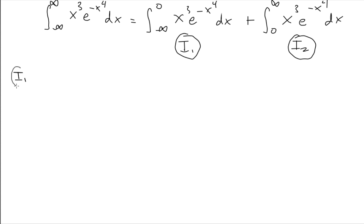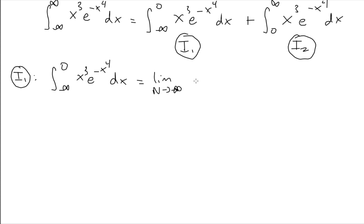Let's take a look at I1. I1 is the improper integral from negative infinity to zero of x cubed e to the negative x to the power of 4 dx. Of course, that means it is the limit as n goes to negative infinity of the integral from n to zero of x cubed e to the negative x to the power of 4 dx. This is what it means to have an infinity in the bottom — we replace it by some number n and at the end let n go to negative infinity. So this just becomes a definite integral, something we have tools for.